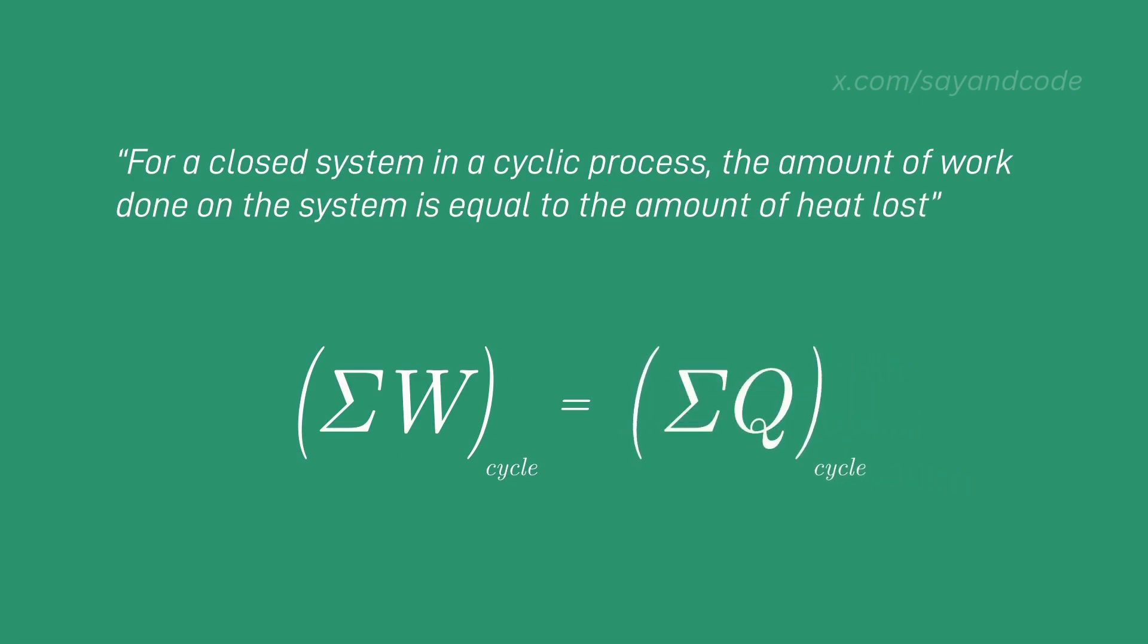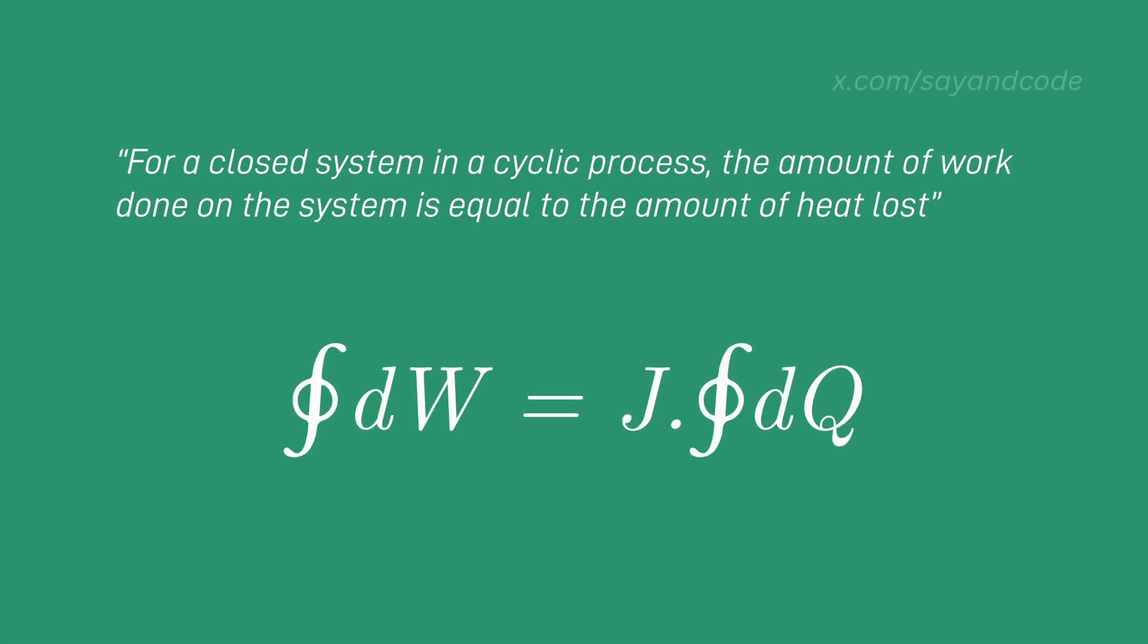Or in cyclic integral form, the cyclic integral of dW is equal to J times the cyclic integral of dQ, where J is a constant called Joule's constant.